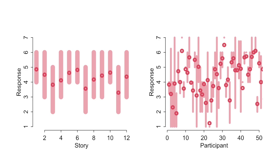The pink intervals represent the 50% intervals for each story. On the right of the slide I'm showing the same sort of plot but for participants — just the first 50, because there are 331 and that doesn't fit on the slide nicely. In both cases, what I want you to see is there's variation across stories and especially across participants, where some participants assign almost everything a rating of 7 and others almost everything a rating of 1. Some stories appear to be consistently lower rated than others.